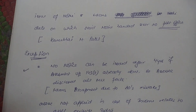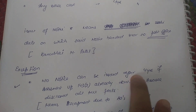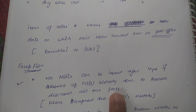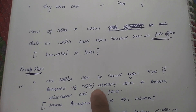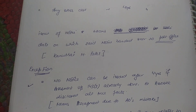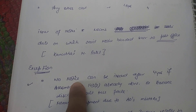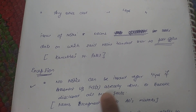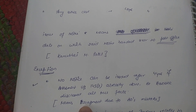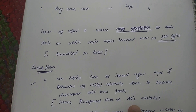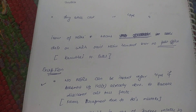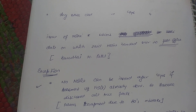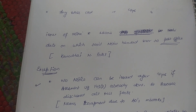Now let's discuss exceptions to Section 149. The first exception is: no notice can be issued after 4 years if assessment under Section 143(3) is already done and the assessee disclosed all true facts. So even if income escaped is one lakh or more — allowing a 6-year window — in such cases no notice can be issued after 4 years.